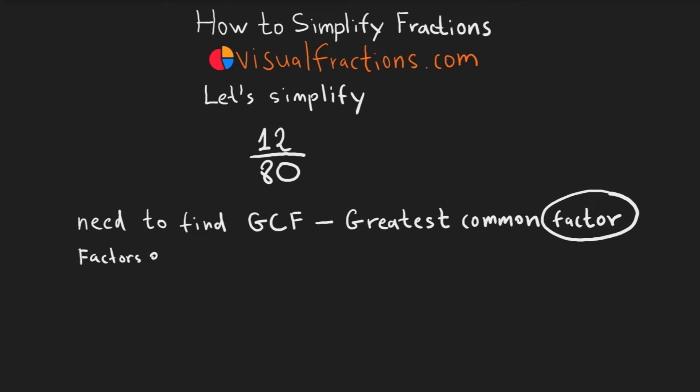For 12, the factors that fit this description are 1, 2, 3, 4, 6, and 12, because each of these numbers can divide 12 with zero remainder.